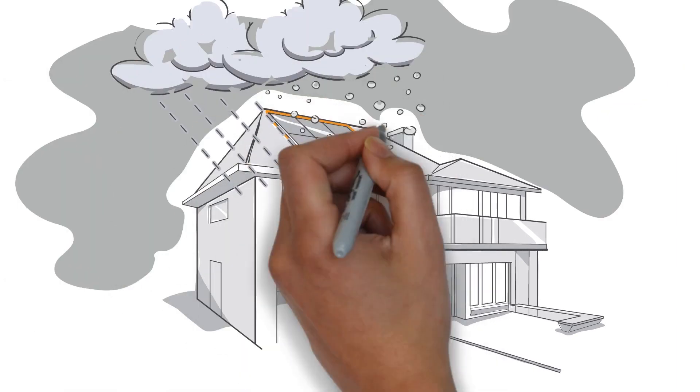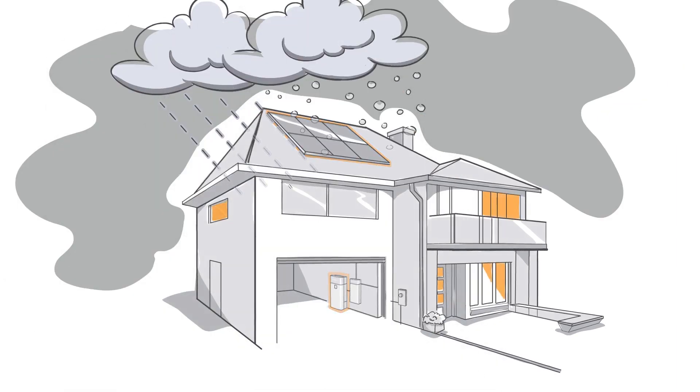If the power goes out, you can use that stored energy to keep the lights on or run essential appliances like your refrigerator. With SunVault, you get two times the power of conventional storage systems, so you can run more of your home in an outage.